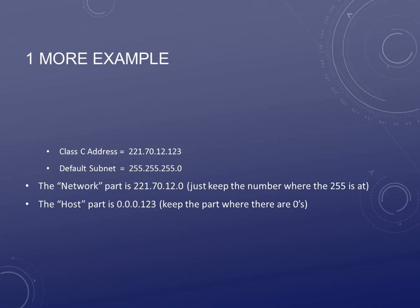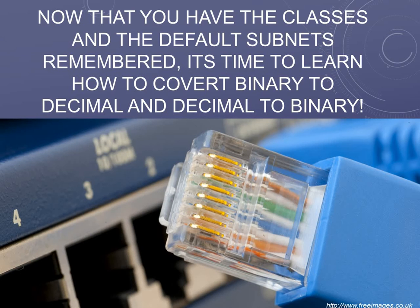Once you remember your classes — Class A, B, and C and their ranges — once you know which ones you can't use, the reserved ones, and you know the default subnet masks for all classes, now you're ready to move on. Now it's time to go from binary to decimal and decimal to binary. You have to be able to do this in order to subnet, because you're going to constantly switch from one to the other. So we're going to wrap this one up, and the next video will show you a very simple way of converting from binary to decimal and decimal to binary. Look forward to seeing you in the next one.